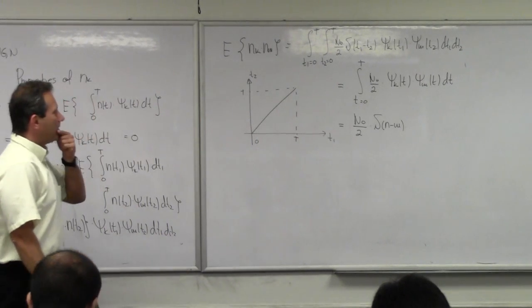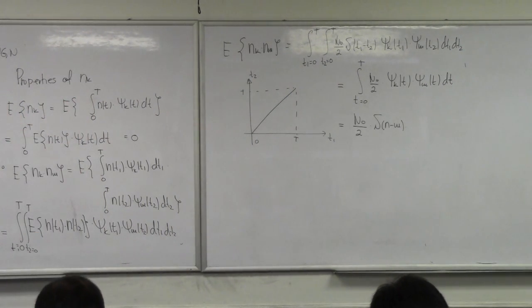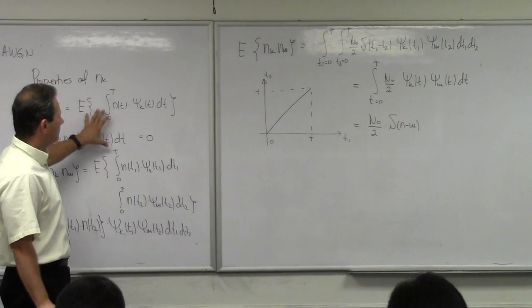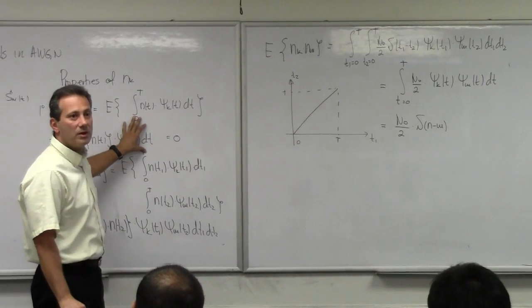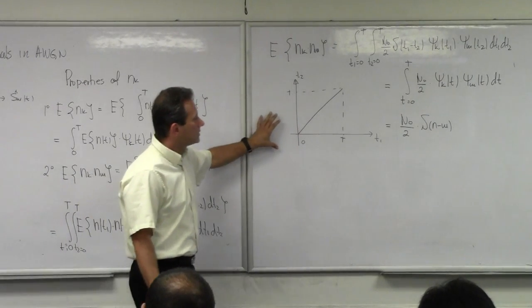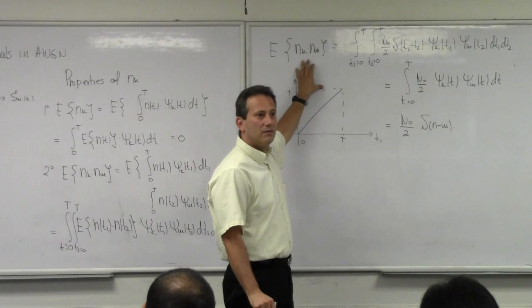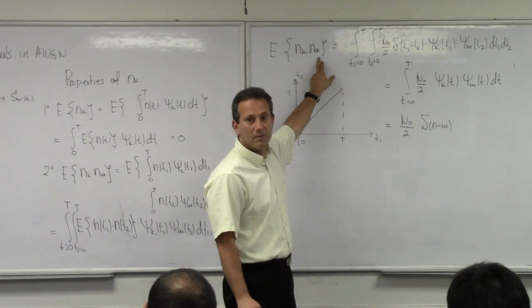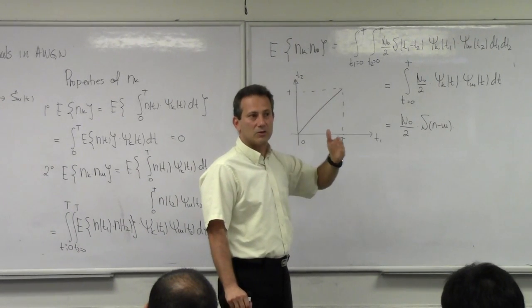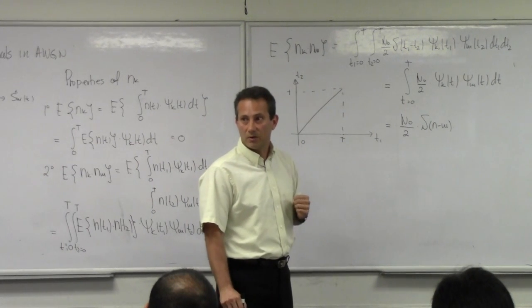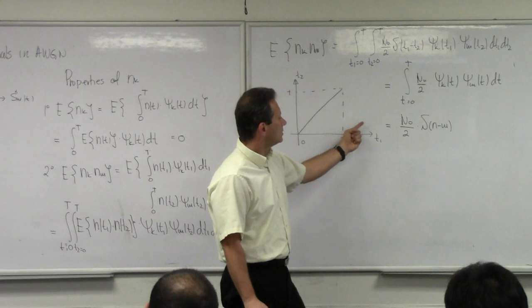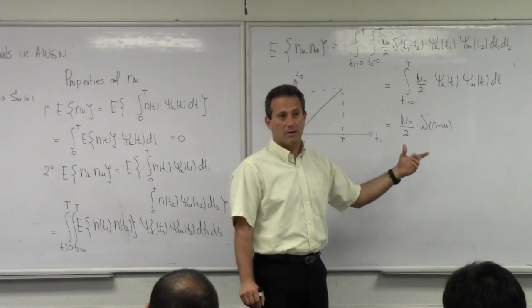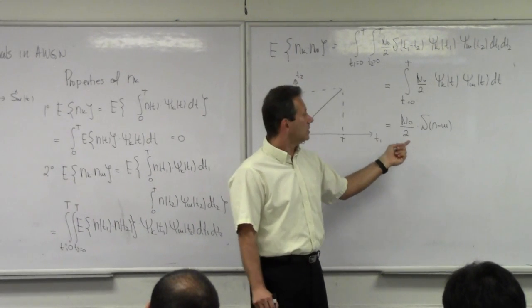What does this mean practically? In the first result I proved that the noise along these components has zero mean. Here I proved two things: first, the noises in individual branches are independent of each other — when k is different from m the expected value is zero — so if we have two basis vectors, the noise along the first and noise along the second are independent. Second, in every single branch the variance equals N₀/2.